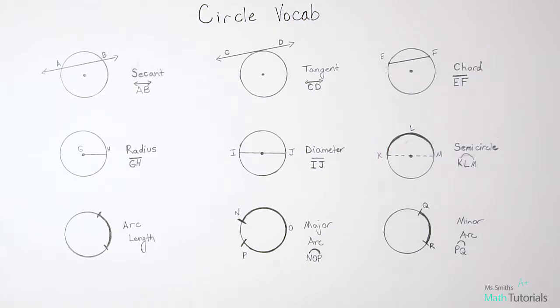It's important that when we label a secant that we use the two letters and that above it we put a line with arrows because that's showing that it's a continuing line, not just a segment.